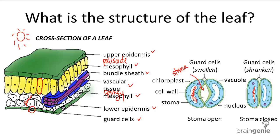The upper and lower epidermis protect the rest of the cells, and there's also an additional layer called the cuticle made of cutin, a waxy substance that helps minimize water loss through transpiration. It is essentially a laminated layer above and below the upper and lower epidermis.